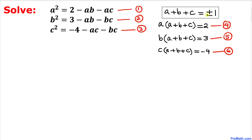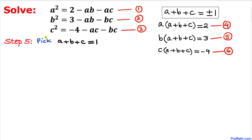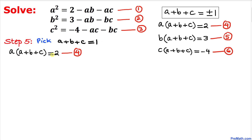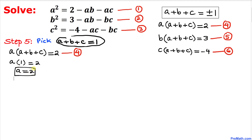To recap: we have a + b + c = ±1, and equations 4, 5, and 6. Let's first pick a + b + c = +1 and substitute into equations 4, 5, and 6. For equation 4: a × 1 = 2, so a = 2.